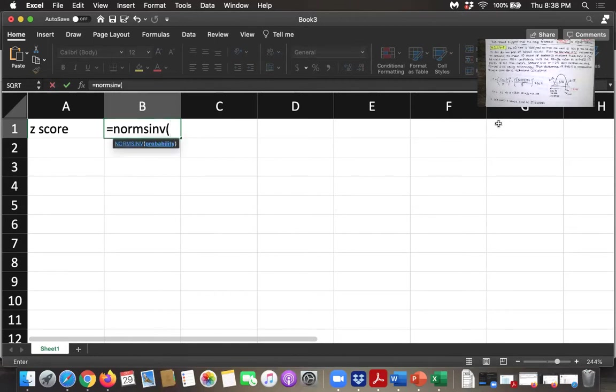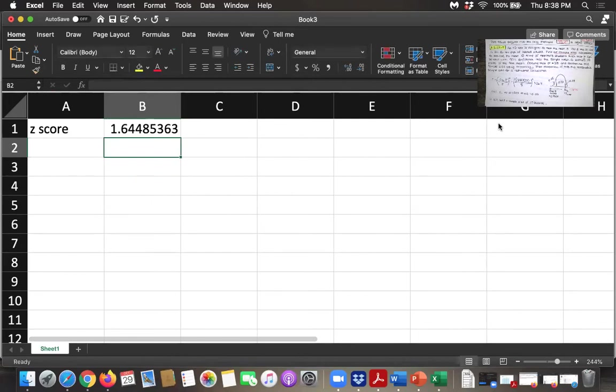We open parentheses and it asks for the probability. That's the area to the left. For a 90% confidence interval, the area to the left is that 90% plus that 5% in the tail. So it's 95% of the area or 0.95. That's our Z score.